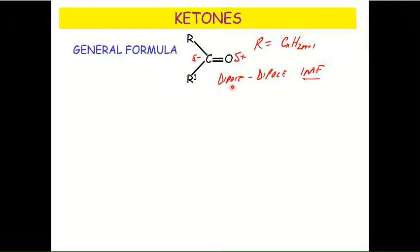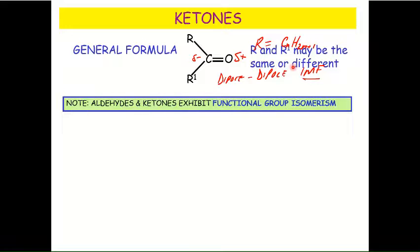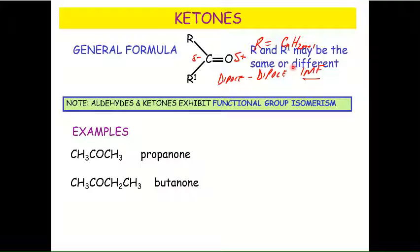And so you've got dipole-dipole intermolecular forces. They've given you the general formula, but the dipole intermolecular forces would mean it's got a slightly elevated boiling point and melting point. Now these two groups are R1 and R - 'R' just stands for a carbon-hydrogen chain - and they can be the same or they can be different. It doesn't matter.